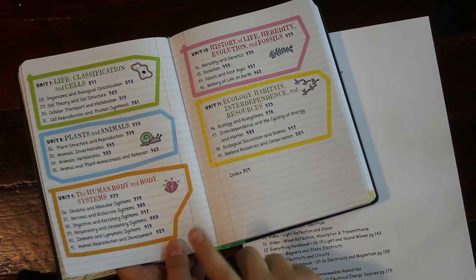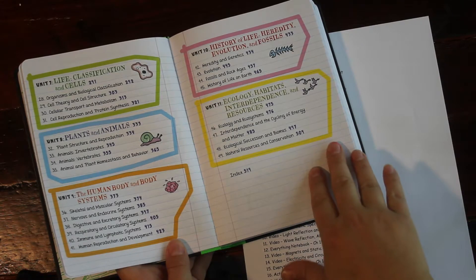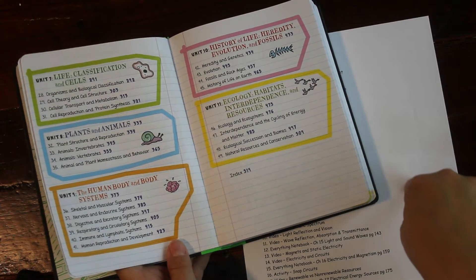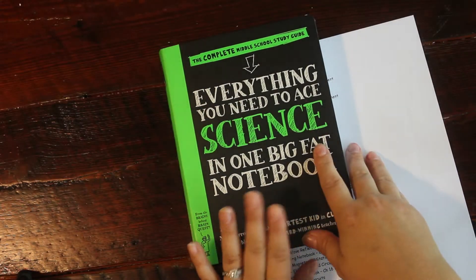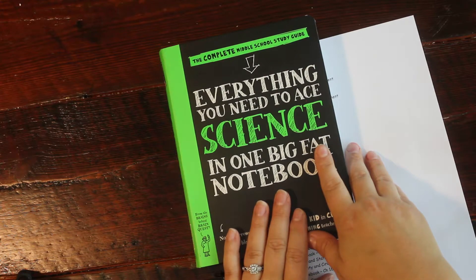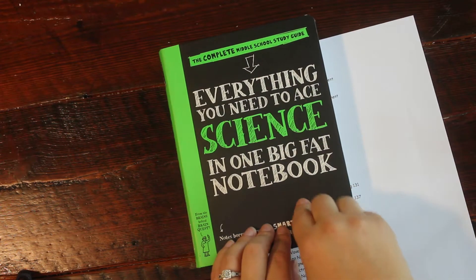So we will be able to use this book for several years. That's what we're just going to keep doing. We're going to keep using this book and generation genius. And yeah, that's what we are doing for science and we are really enjoying it. It works really well.